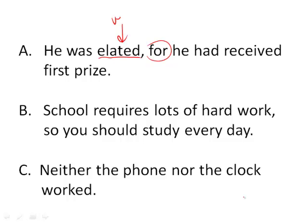Elated means very happy. He was very happy. Why? For he had received first prize. So you can see that we have here an independent clause. He was elated. Subject. Here's our linking verb. For he had received first prize. He had received first prize is a sentence in its own right. So two independent clauses. In the preceding video, we talked about joining those with a comma and the conjunction. And that conjunction, of course, here is for.